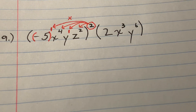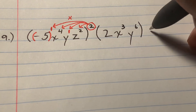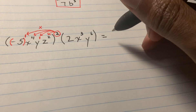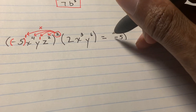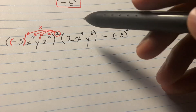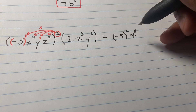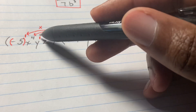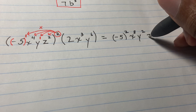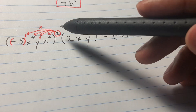Continuing to distribute: two times one gives me negative five in parentheses to the second power. Two times four gives me x to the eighth power. With the power rule we are multiplying, not adding. Two times one gives y to the second power. Two times two gives z to the fourth power.